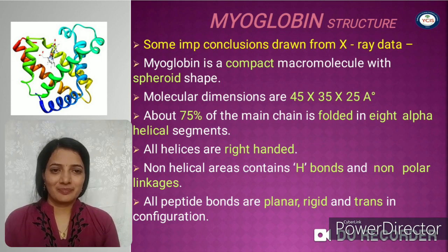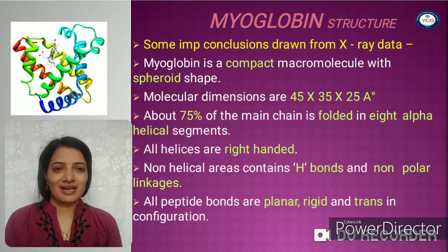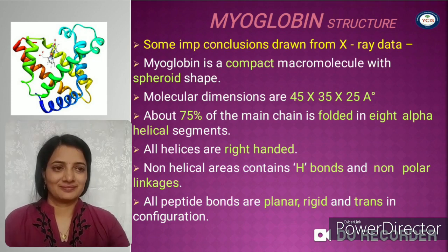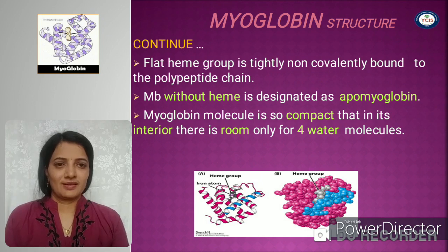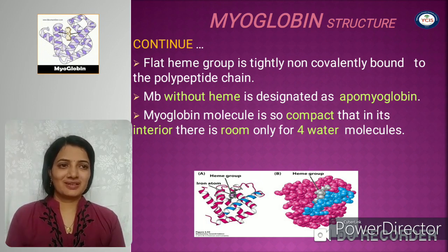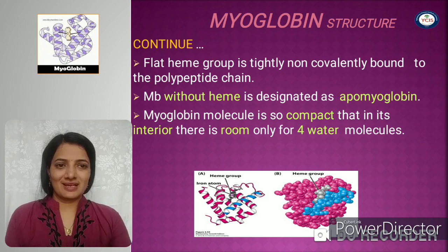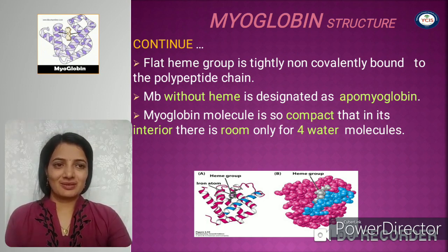These other regions are packed using hydrogen bonds and non-polar linkages. All peptide bonds are planar, rigid, and in trans configuration. The flat heme group is tightly and non-covalently bound to the polypeptide chain. Without the heme group, myoglobin is referred to as apomyoglobin. The myoglobin molecule is so compact that there is room for only four water molecules.